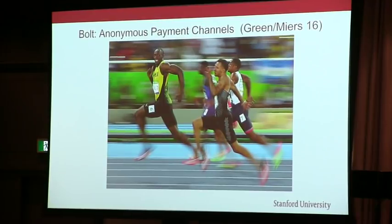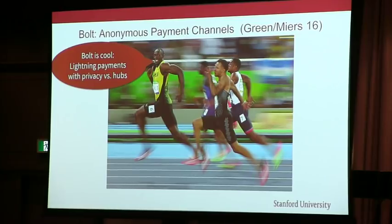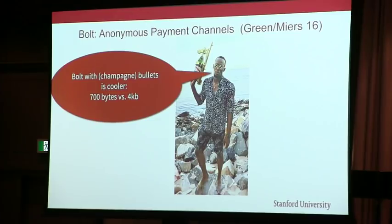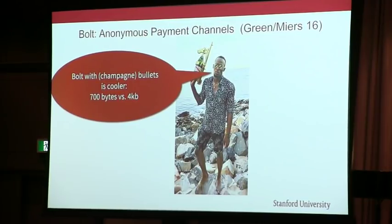Now let's come to applications you might be more interested in. We heard the talk earlier about Bolt and anonymous payment channels, which is a really cool protocol allowing lightning payments with privacy versus the intermediaries or hubs. But what's even cooler than Bolt is Bolt with Bulletproofs, because it allows you to reduce the proof size. Bolt uses range proofs and other proof techniques, and these small circuits are what Bulletproofs are really good for.